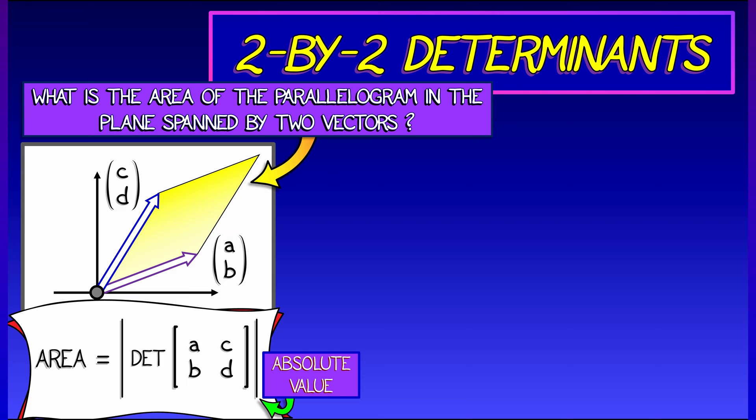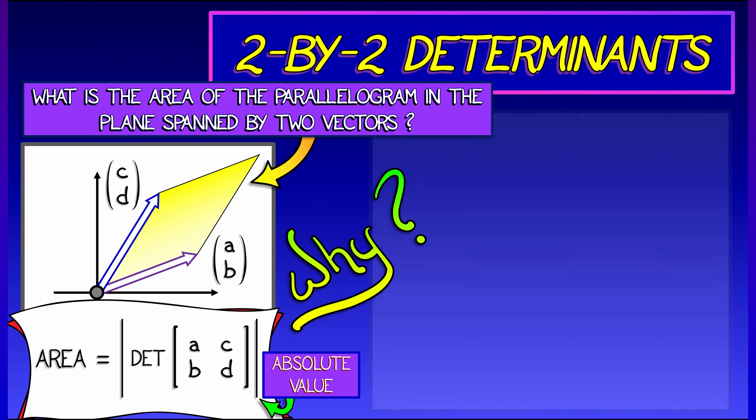Since in general, a determinant can give you a negative number. We don't want that for area, right? Okay. That's the claim. Why is that true?